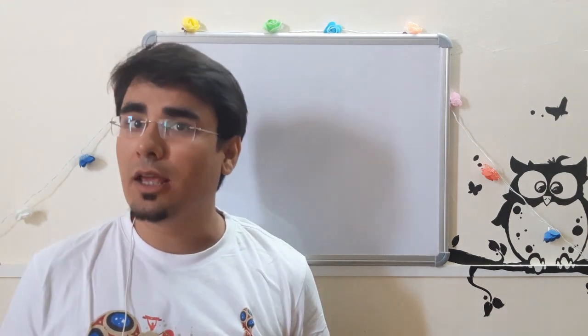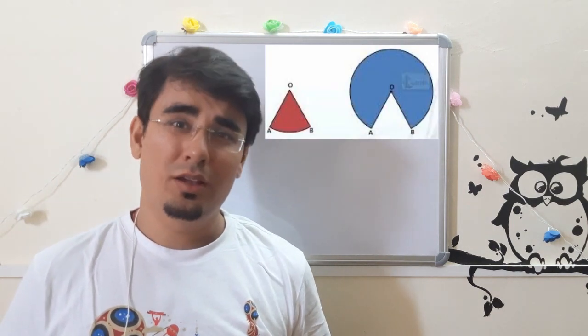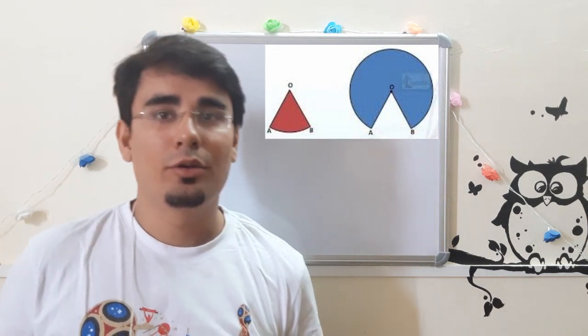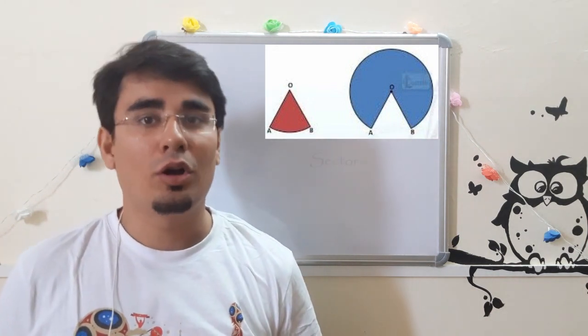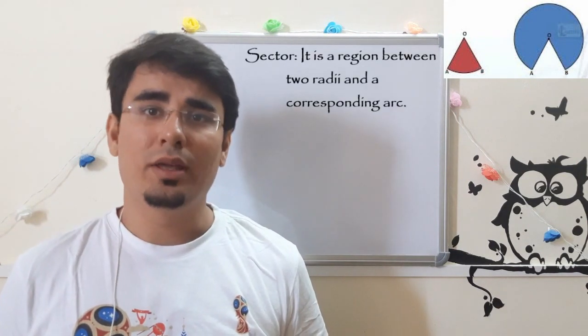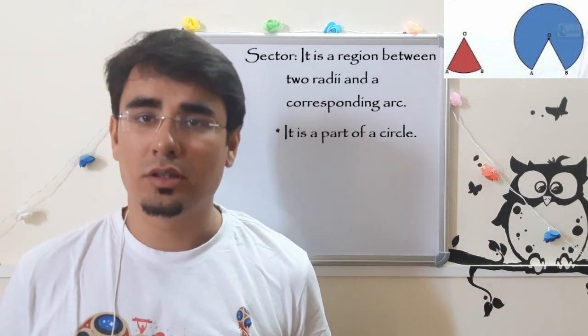Have you ever wondered what is the name of this shape? I used to think it's an inflated triangle, but it has a special name called sector. A sector is a region between two radii and a corresponding arc. It is a part of a circle.